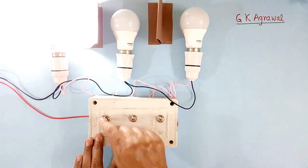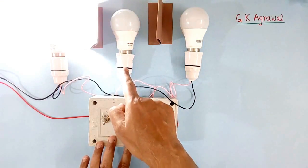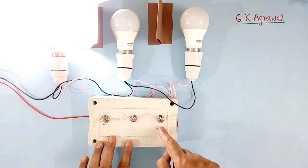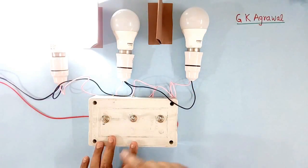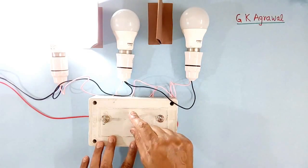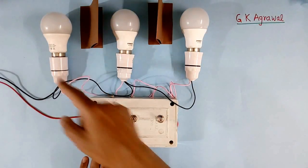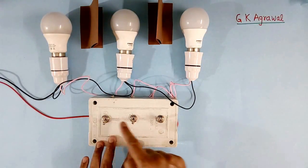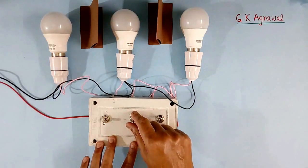Now suppose this bulb is on. Now I try to make this bulb on, so they will not become on, this also will become off. This has become off also. So both at a time on means no bulb will be on.